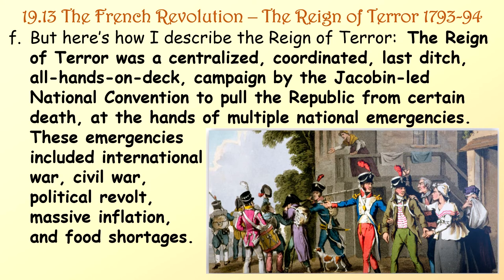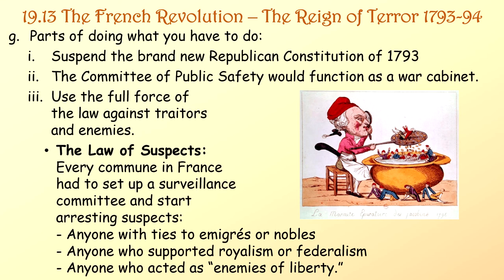The Reign of Terror was a centralized, coordinated, last-ditch, all-hands-on-deck campaign by the Jacobin-led National Convention to pull the Republic from certain death at the hands of multiple national emergencies — including international war, civil war, political revolt, massive inflation, and food shortages. Parts of doing what had to be done: number one, suspend the brand-new Constitution of 1793 still sitting in its cedar box; number two, the Committee of Public Safety would function as a war cabinet; number three, use the full force of the law against traitors and enemies — hence the Law of Suspects.